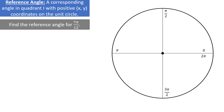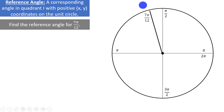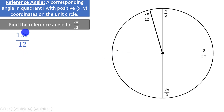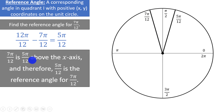Let's try a problem using radians. Let's say we are asked to find the reference angle for 7 pi over 12. 6 pi over 12 would be equivalent to pi over 2, so 7 pi over 12 must be just past pi over 2. To find the reference angle, we need to know how many radians we are above the negative x-axis. The negative x-axis corresponds to 12 pi over 12, which is the same as pi. If we take 12 pi over 12 and subtract our angle of 7 pi over 12, that gives us 5 pi over 12. So 7 pi over 12 is 5 pi over 12 above the negative x-axis, meaning 5 pi over 12 is the reference angle. The x and y-coordinates at 7 pi over 12 and 5 pi over 12 will be the same, except the x-coordinate is negative since we are to the left of the y-axis.